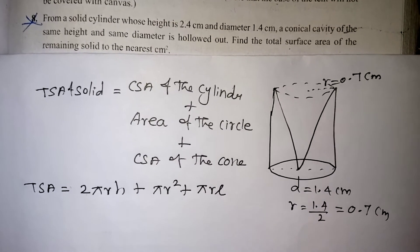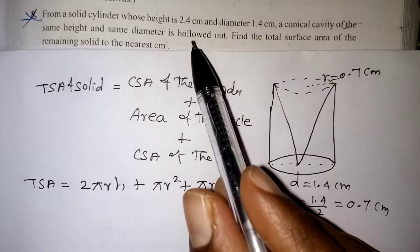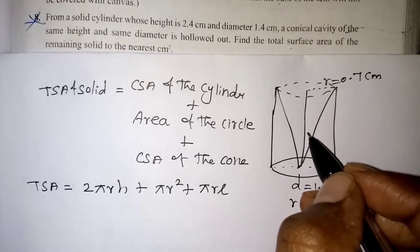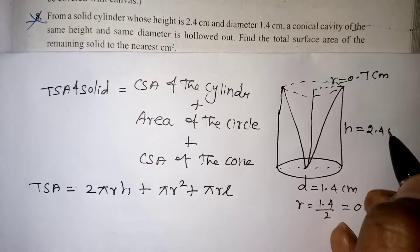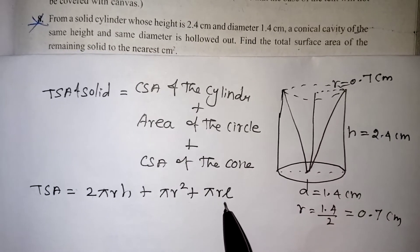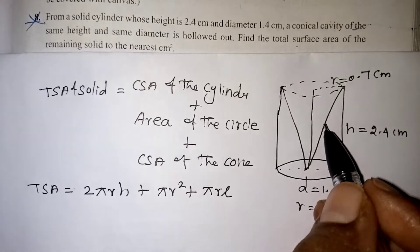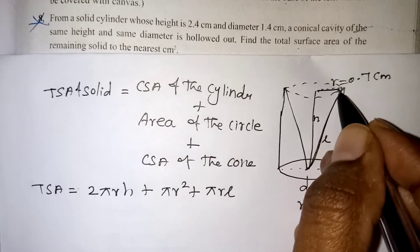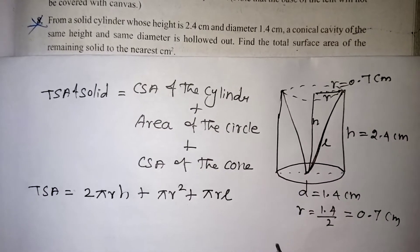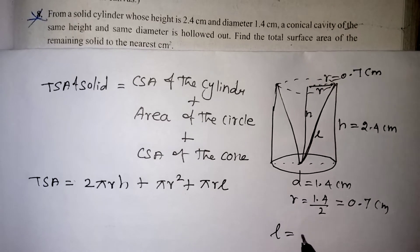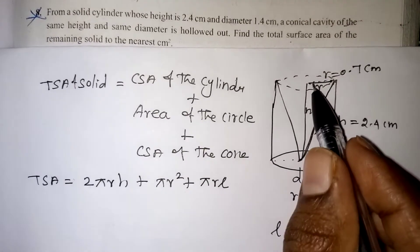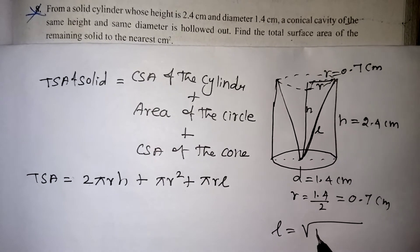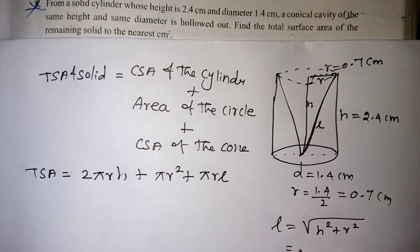The height given in the question is 2.4 cm — the height of the cylinder and the height of the cone are both 2.4 cm. Now we need the slant height L of the cone. L is the slant height, H is the vertical height, and r is the radius. We apply the Pythagorean theorem since L is the hypotenuse: L equals the square root of H squared plus r squared.